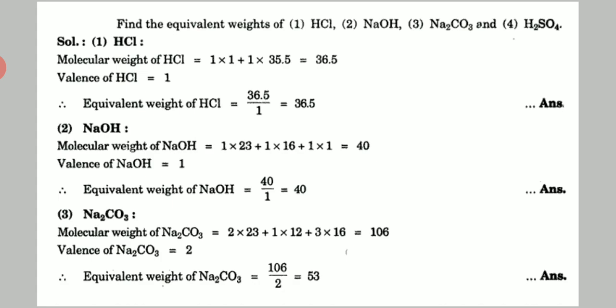The third case is sodium carbonate Na2CO3. If we divide it into ions, we get 2Na+ and CO3²−, so its valency is 2. Its molecular weight is 2 × atomic weight of sodium + 1 × atomic weight of carbon + 3 × atomic weight of oxygen, which equals 106. So the equivalent weight is 106 divided by 2, which equals 53.